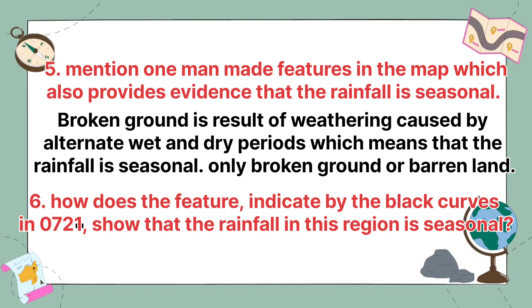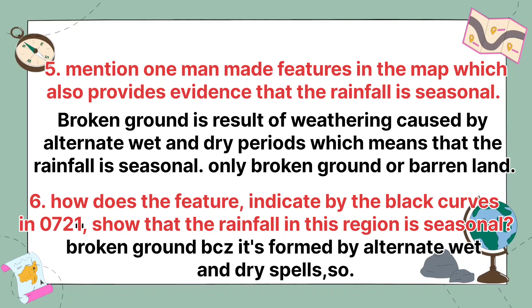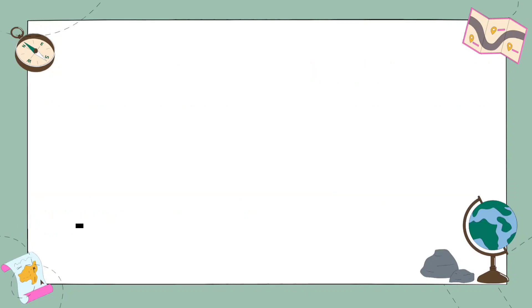How does the feature indicated by the black curves in grid square 0721 show that rainfall in this region is seasonal? The answer is broken ground, because it is formed by alternate wet and dry spells.